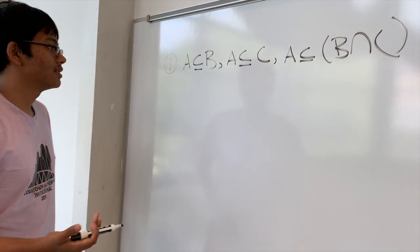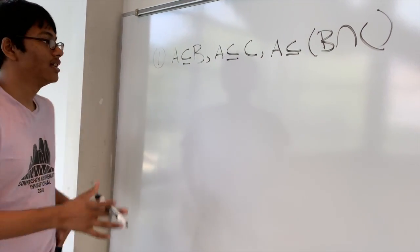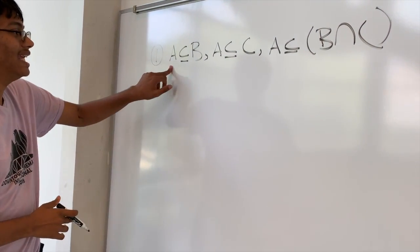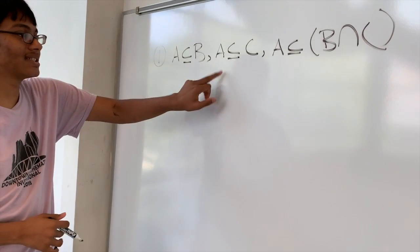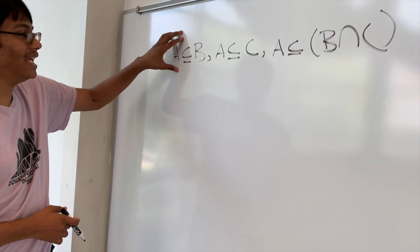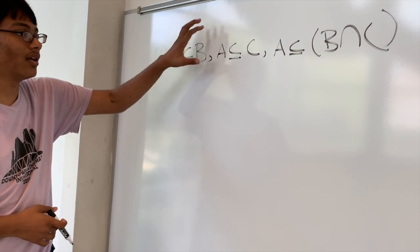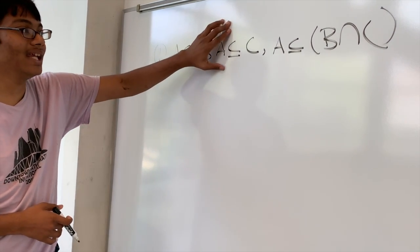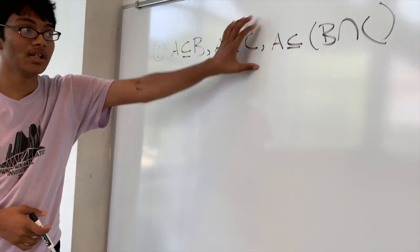Well, let's take a look at it qualitatively. We know that A is a subset of B and A is a subset of C. So all the elements in A must be in B, and all the elements in A must also be in C.